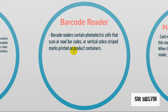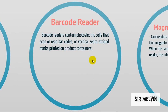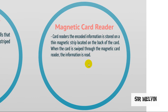Next, the barcode reader. Barcode readers contain photoelectric cells that scan or read barcodes, the vertical zebra strips marked and printed on product containers. Next, the magnetic card reader. The encoded information is stored on a thin magnetic strip located on the back of the card. When the card is swiped through the magnetic card reader, the information is read.